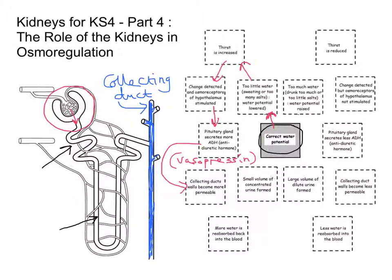This is a little extra detail, maybe a bit beyond Key Stage 4, but when ADH is released you get what are called aquaporins — A-Q-U-A-P-O-R-I-N-S. Aquaporins are the little proteins that go into the membranes of the cells of the collecting duct, and it's through those aquaporins that water can pass through. So water is actually reabsorbed back into the blood — back into the peritubular capillaries.